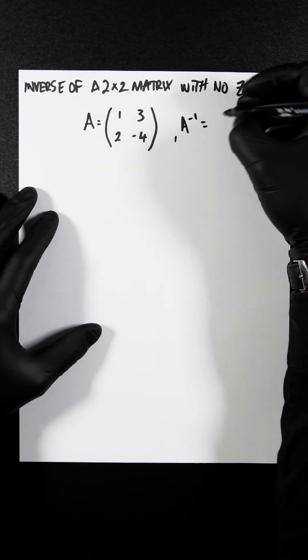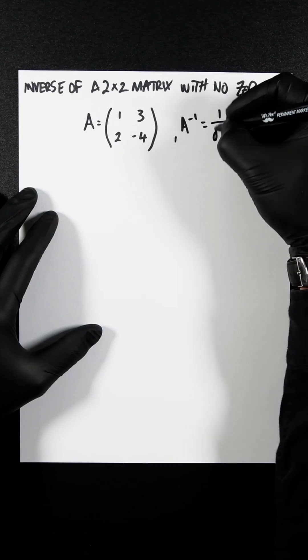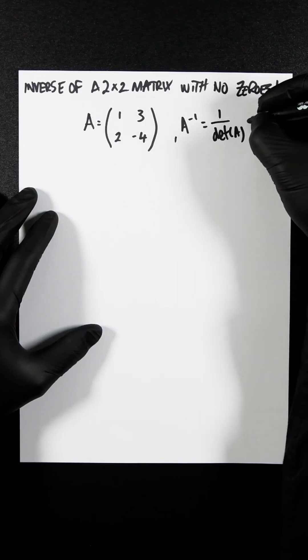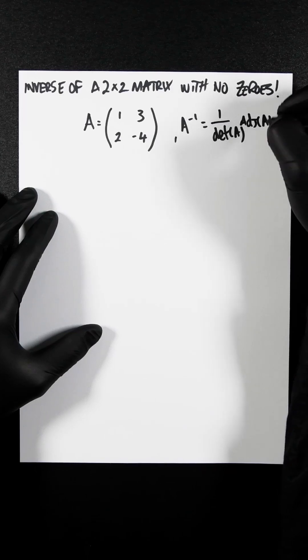You should or may be familiar with the equation of finding out the inverse, which is 1 over the determinant, and then the adjugate of A.